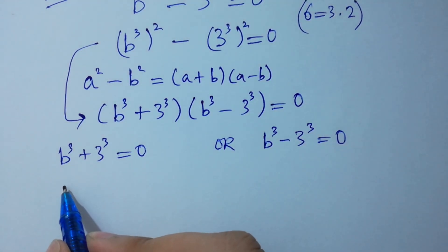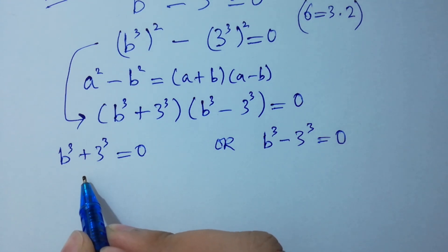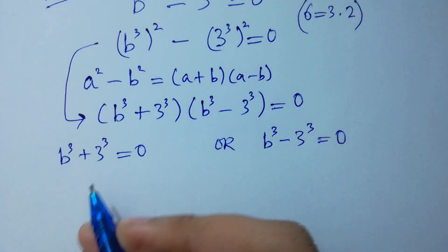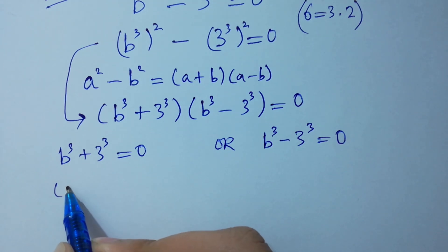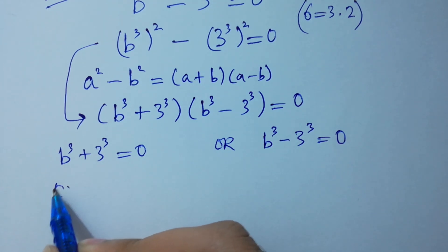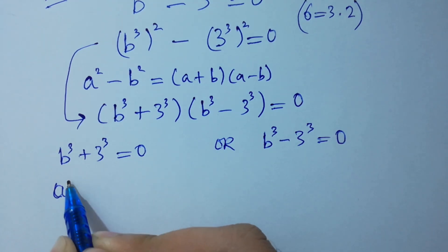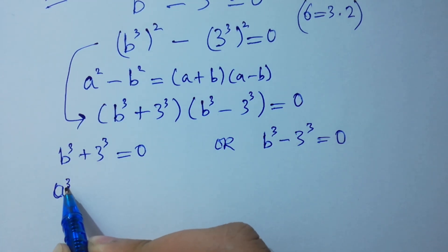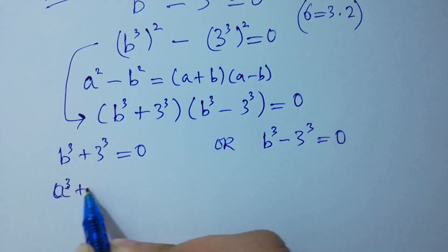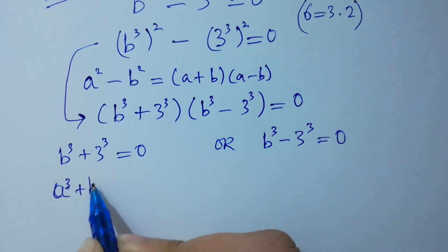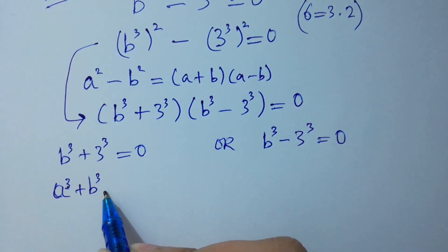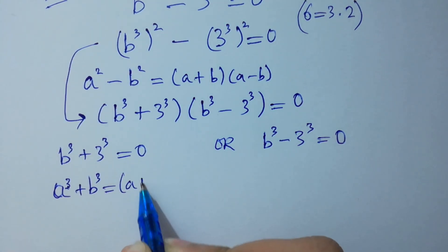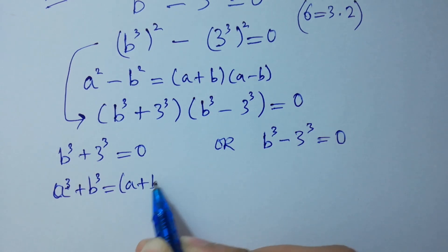For B cubed plus 3 cubed, we apply the formula A cubed plus B cubed, which equals A plus B times...